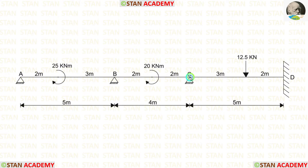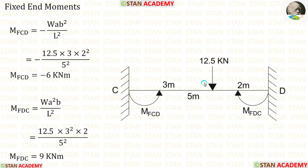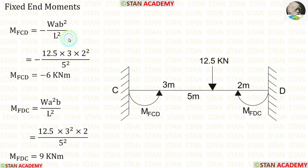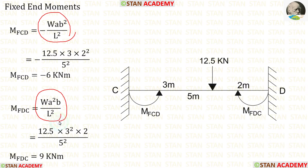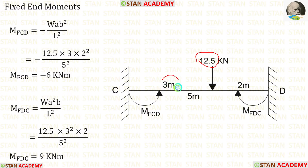Now let us find the fixed end moments in span CD. There is a concentrated load of 12.5 kN not acting at the center. The formulas are: minus W·A·B² divided by L², and positive W·A²·B divided by L². Here W is 12.5, A is 3, B is 2, L is 5. Applying the values, we get MCD and MDC.